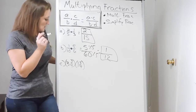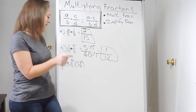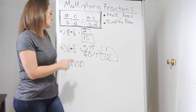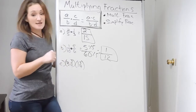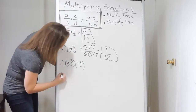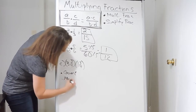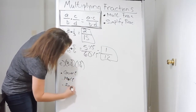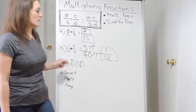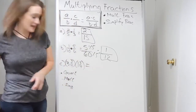Example C involves mixed numbers: 3 and 3 fourths times 1 and 3 fourths. The main thing you need to know about multiplying mixed numbers is that you need to convert them first. So when dealing with mixed numbers: convert first, then multiply, then simplify. You need to make sure you convert them to improper fractions — that's our first step.